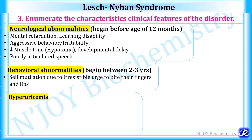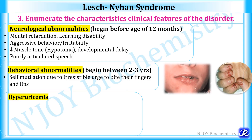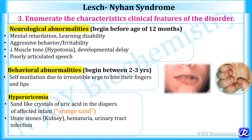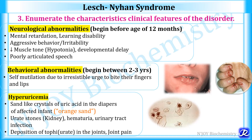Behavioral abnormalities include self-mutilation behavior: there is an irresistible urge to bite their own fingers, nails, and lips. Regarding hyperuricemia, increased uric acid production leads to orange sand-like crystals of uric acid in the diapers of affected infants. It leads to urate (sodium urate) kidney stone formation, causing hematuria and susceptibility to urinary tract infection. These urate stones can also be deposited in joints as tophi, leading to joint pain.